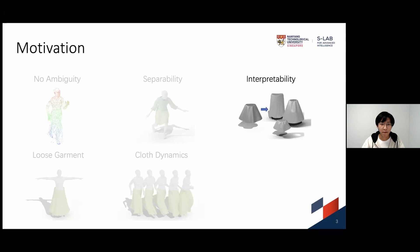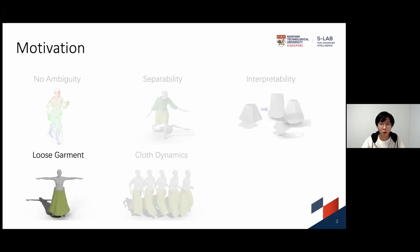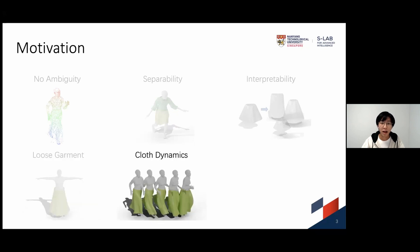Thirdly, for the convenience of downstream tasks like retexturing, the topology of reconstructed garments should be interpretable, which means same type of garments should share a template mesh. Moreover, loose garments like skirts are of the same importance as tight garments and we should take them into consideration. Lastly, for real-world application, the ability to reconstruct a sequential input and capture the dynamics of garments are also important.